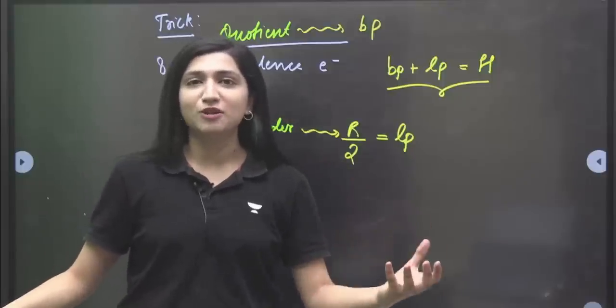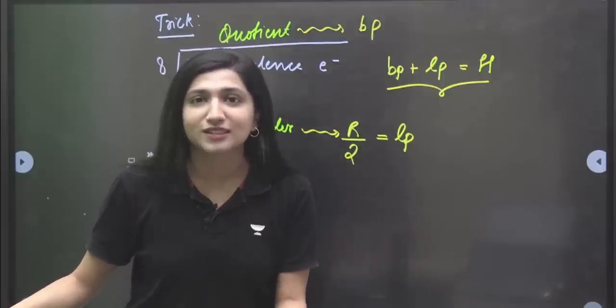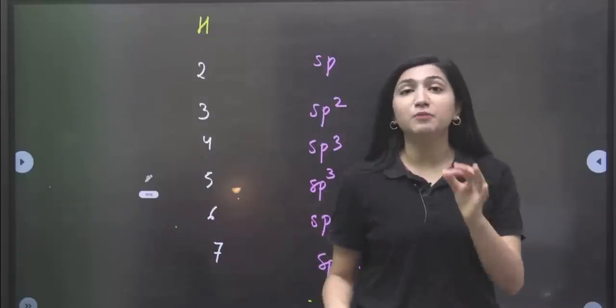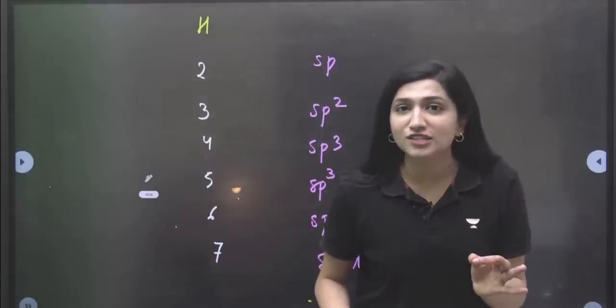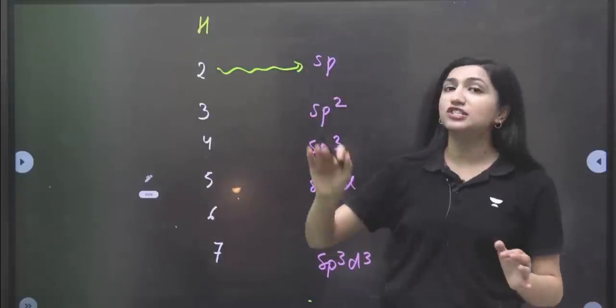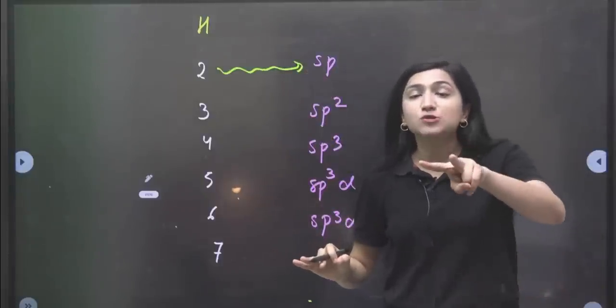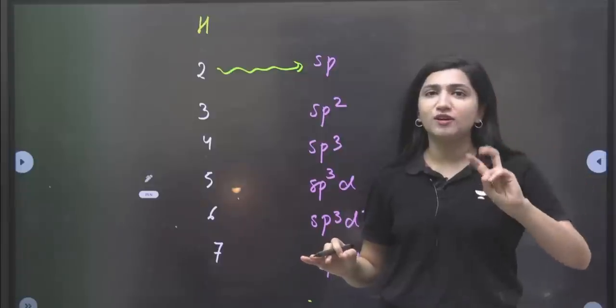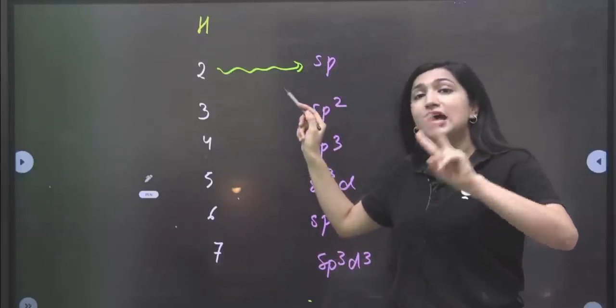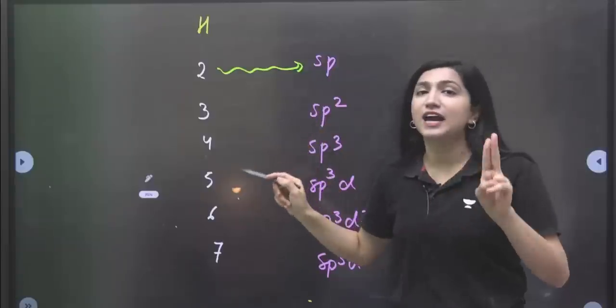So number of lone pairs plus bond pairs, and here you will know the hybridization of the molecule. So if your hybridization value is 2, that means your hybridization is SP, because there are two atomic orbitals involved in SP. There are atomic orbitals S and P involved, so it becomes SP.